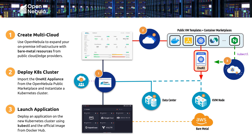This will give you an overview of the demo. First, we are going to show the multi-cloud environment where we have already deployed an AWS cluster based on bare metal resources provided by AWS. Then we will show how to import the OneKE appliance onto the cluster, and then use kubectl to connect to the Kubernetes cluster, use the API to deploy an Nginx application, and expose the application.